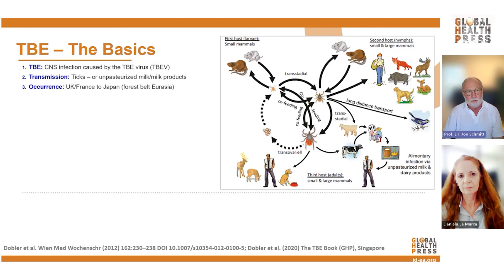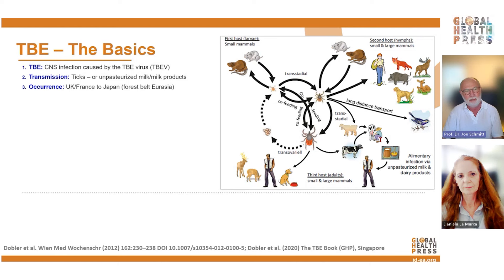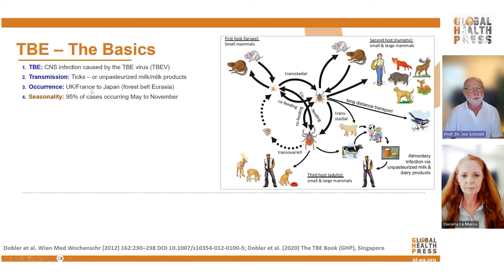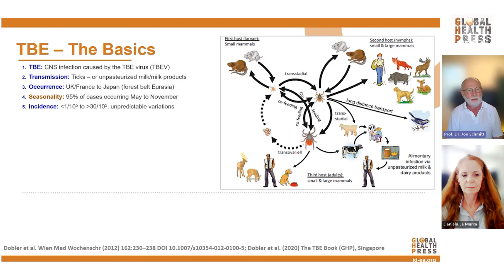The disease occurs from the United Kingdom to Japan in the far east and from very high northern latitudes in Norway down to Tunisia — a very large belt in Europe and Asia. 95% of cases occur during May to November, but you may hear this year why this may change and why there may be transmissions throughout the year due to a new tick that is able to transmit the disease basically year-round. The incidence ranges from less than one per 100,000 to more than 30 per 100,000. It is unpredictable and varies annually.